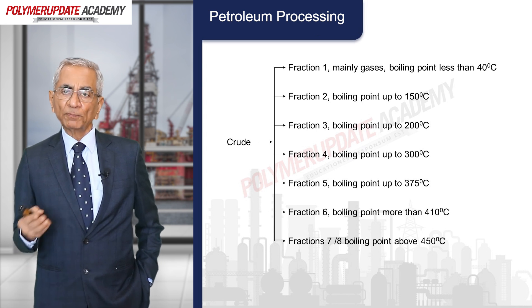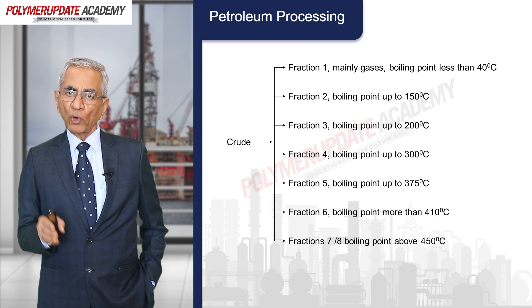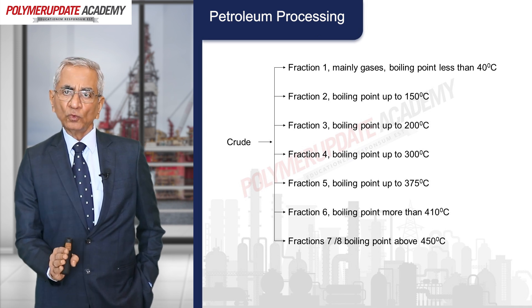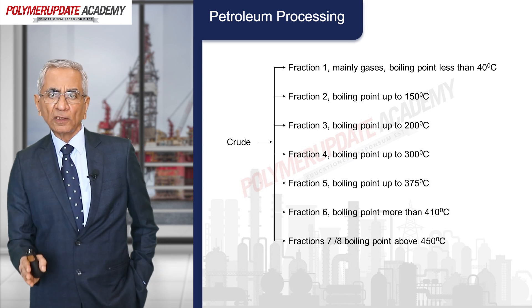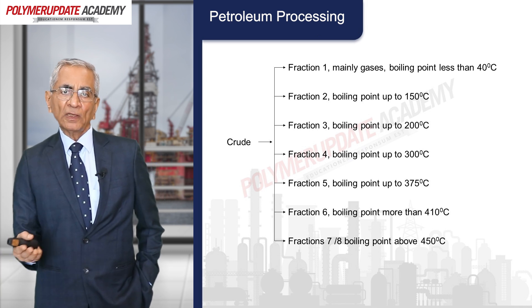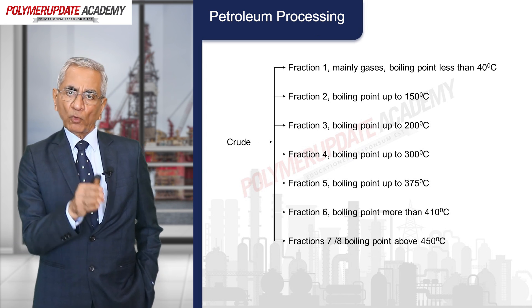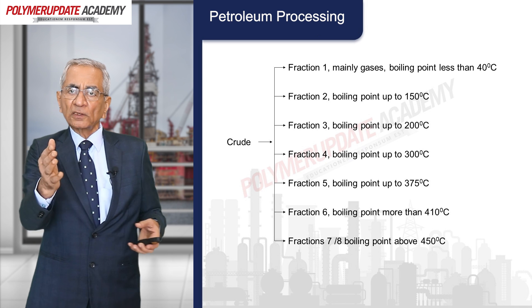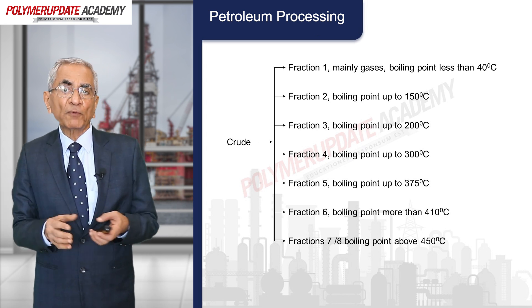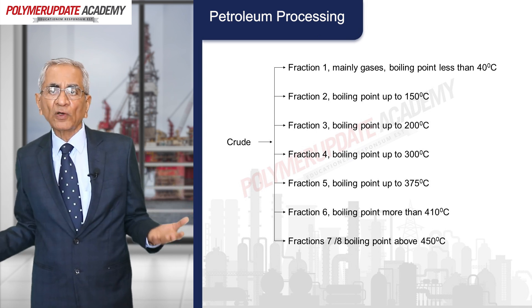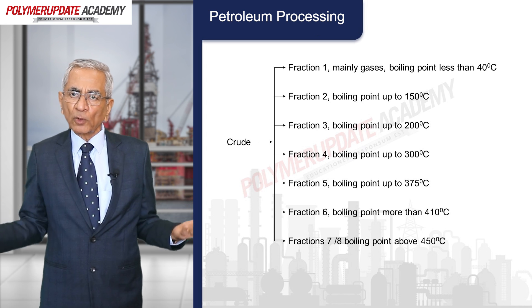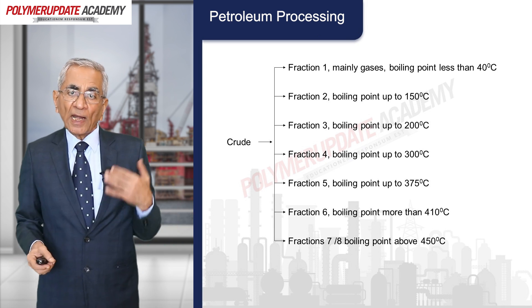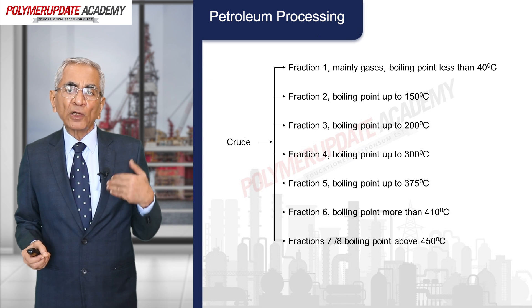Fraction one is mainly gases with a boiling point less than 40°C. Fraction two has a boiling point up to 150°C, and fraction three up to 200°C. Fraction two contains materials with boiling points between 40°C and 150°C, and fraction three between 150°C and 200°C. The top fraction consists of gases with a maximum boiling point of 40°C. Fractions seven and eight have boiling points over 450°C.